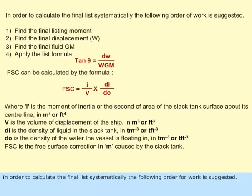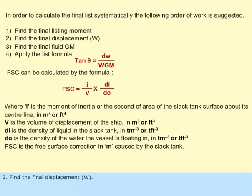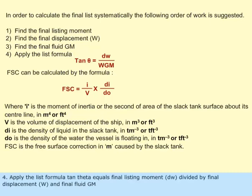In order to calculate the final list systematically, the following order of work is suggested: 1. Find the final listing moment DW. 2. Find the final displacement W. 3. Find the final fluid GM. 4. Apply the list formula: tan theta equals final listing moment DW divided by final displacement W and final fluid GM.